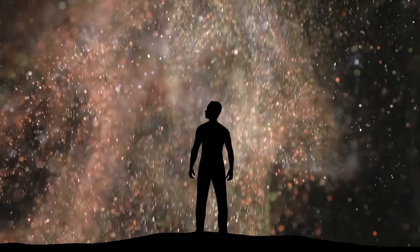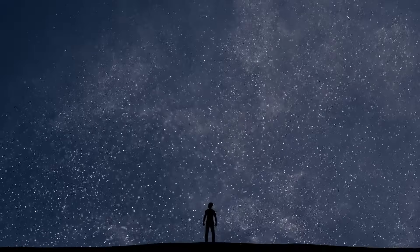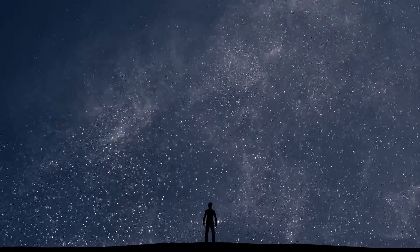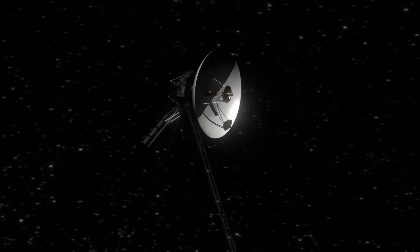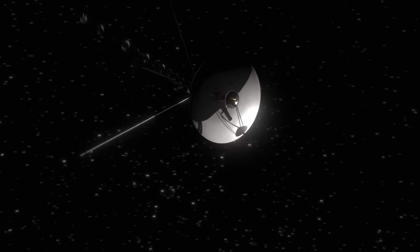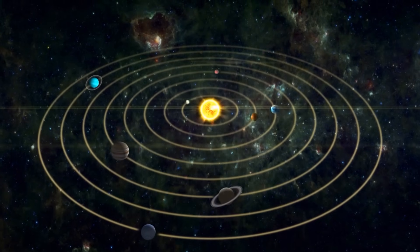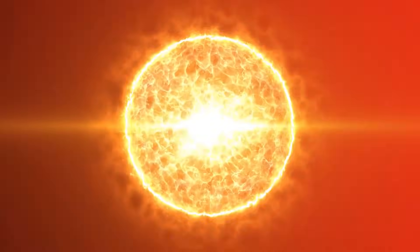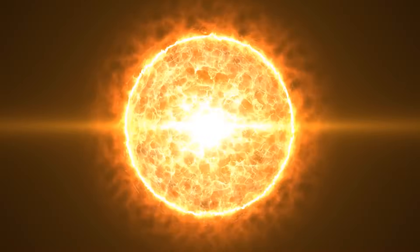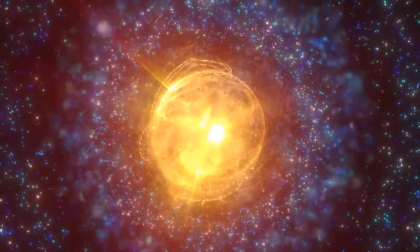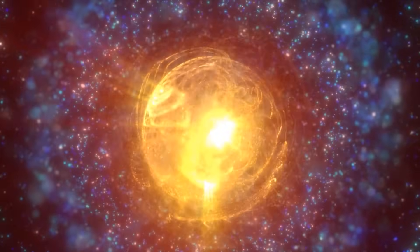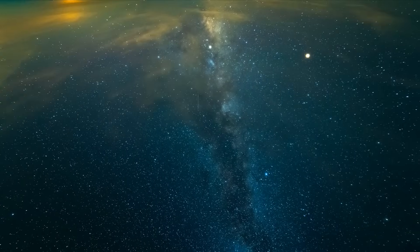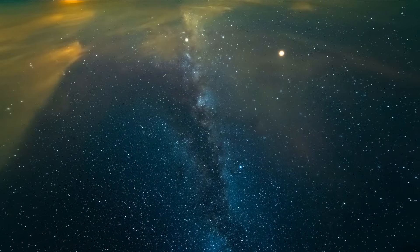Six years later, Voyager 2 followed suit. In November 2018, its almost identical twin also flew through the wall of fire. Voyager 2's instruments are slightly more sensitive, and the second probe was able to provide even more detailed data from the wall of fire at the end of the solar system. It also measured similar temperatures and magnetic turbulence. This made it clear that the wall of fire was not a one-off event that Voyager 1 had perhaps measured by chance. It is a real, permanent phenomenon at the edge of our solar system.